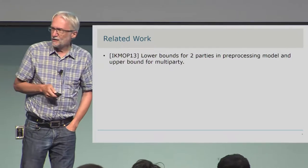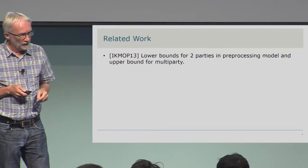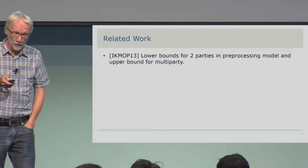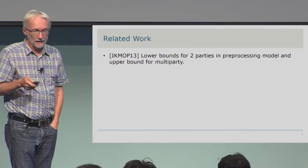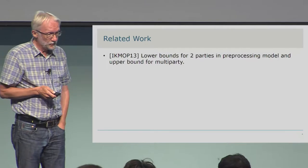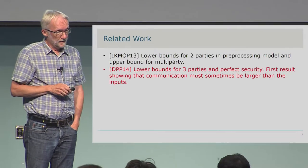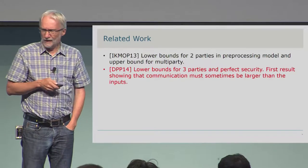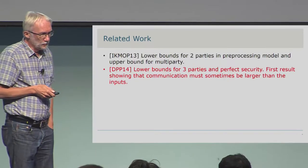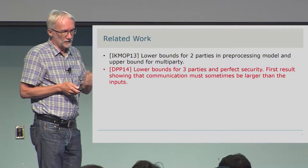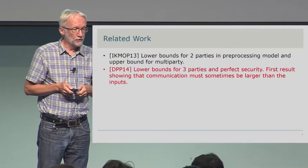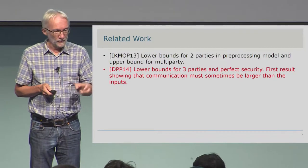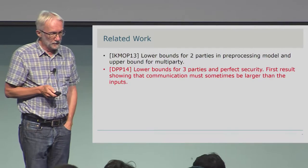Let me mention some related work. First, there's work from 2013 proving lower bounds for two parties in the preprocessing model and the upper bound for the multi-party case I mentioned. Then there's work by Data et al. doing a lower bound for three parties and perfect security — that was actually the first result showing that communication sometimes has to be larger than the inputs, but only in that particular case with three parties.